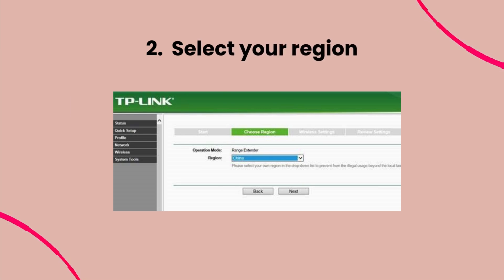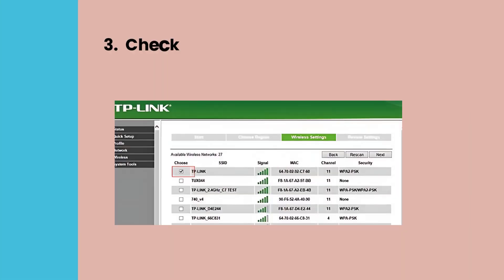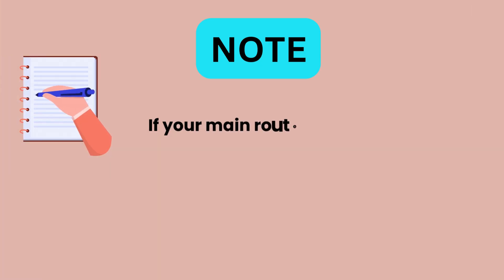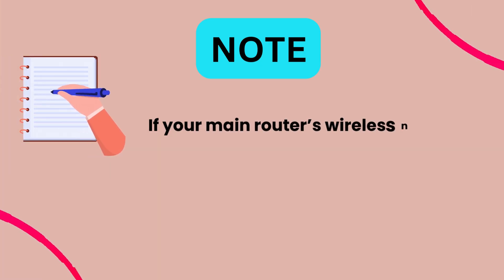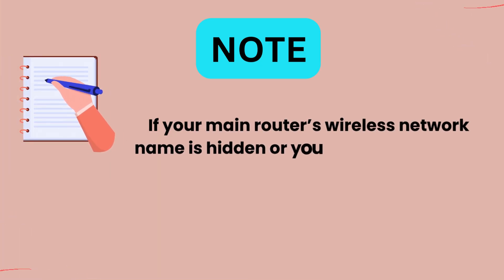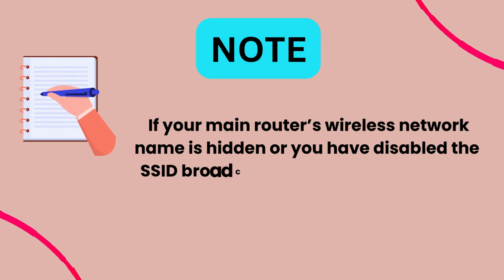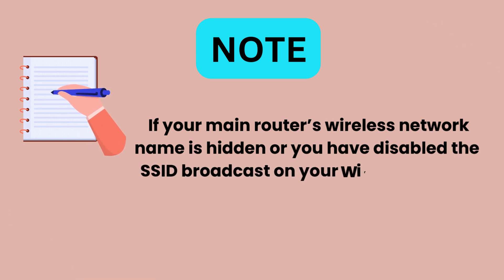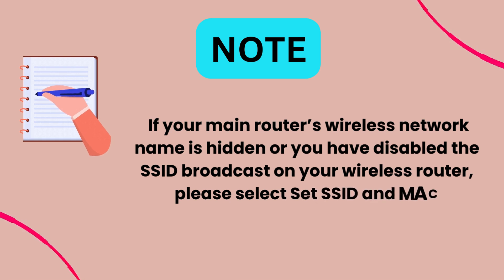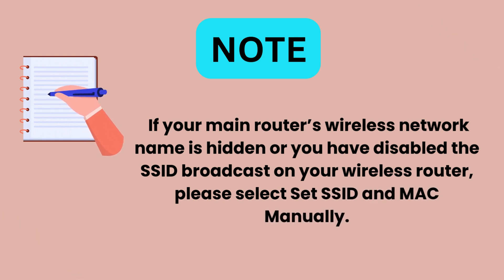Select your region. Check or select your own wireless network. Note: if your main router's wireless network name is hidden or you have disabled the SSID broadcast on your wireless router, please select Set SSID and MAC manually.